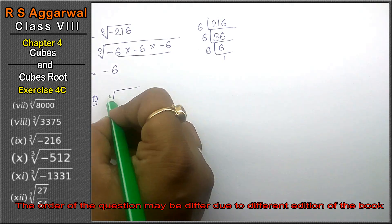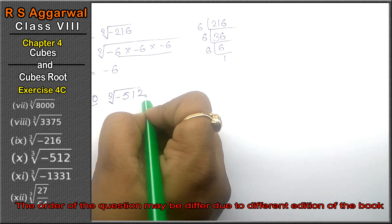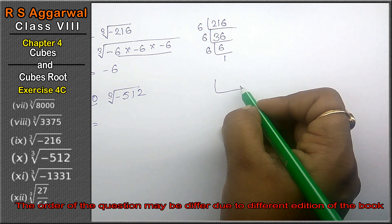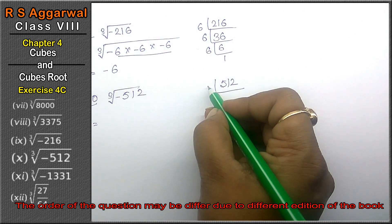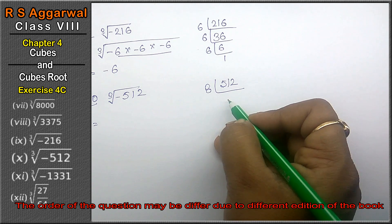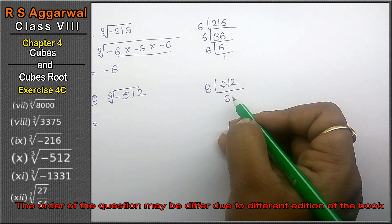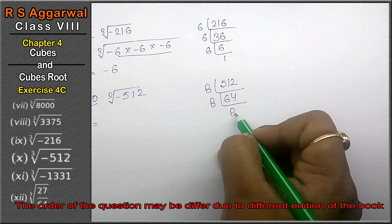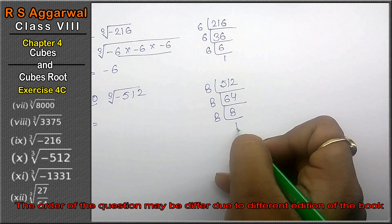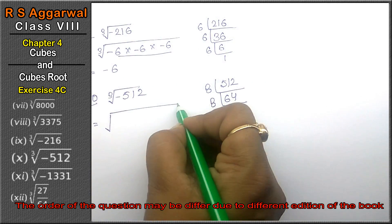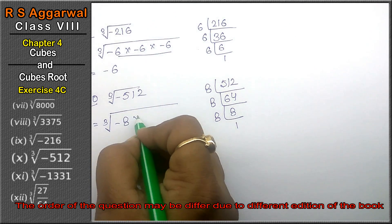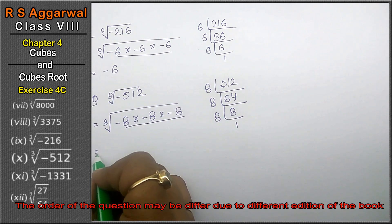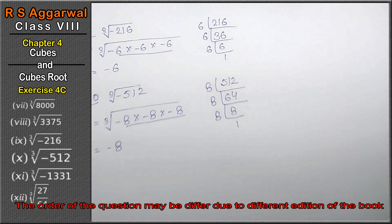Let's do question number 10 of Exercise 4C. Question number 10 is cube root of minus 512. We know 512 = 8³, since 8×8=64 and 8×64=512. So writing in the cube root: (−8)×(−8)×(−8). Making pairs of 3 and taking one out, the answer is −8.